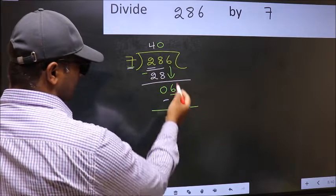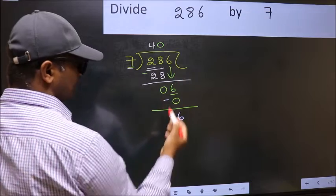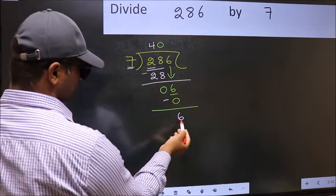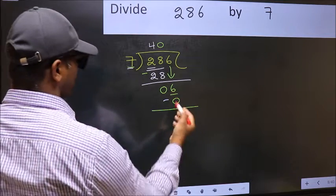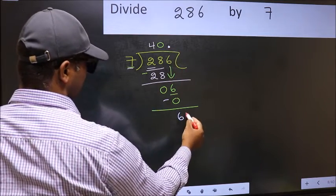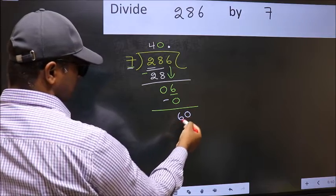Over here, we did not bring any number down. And 6 is smaller than 7. So now you can put dot and take 0. So 60.